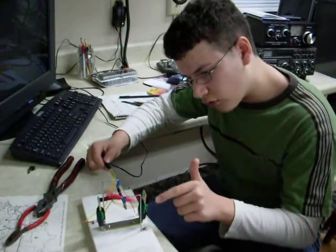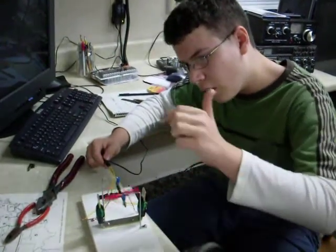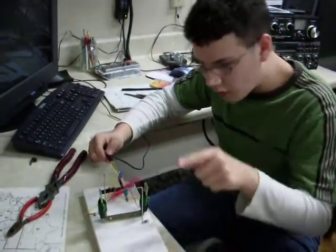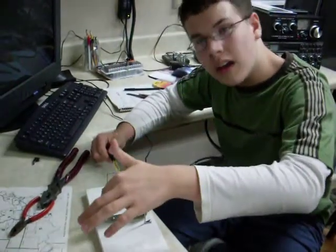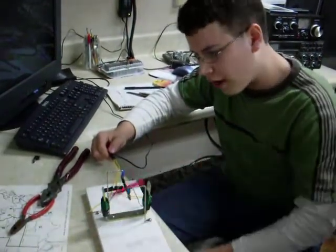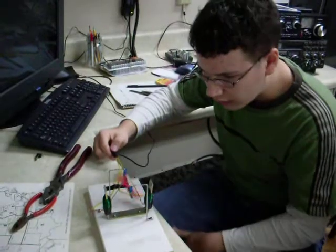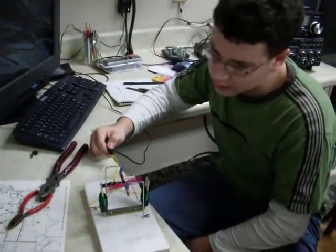It'll attract it to here, but also it's repelling it from here, and then it comes back to this side, and it attracts it, and this side is repelling. So it just keeps spinning. It's like going on and off and on and off through the whole thing.